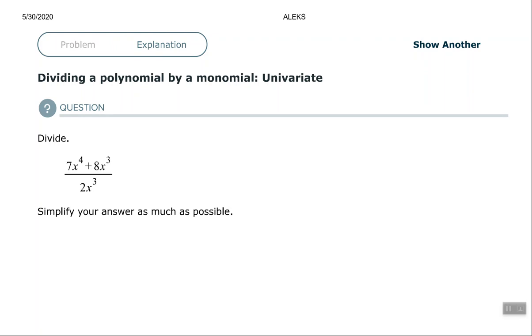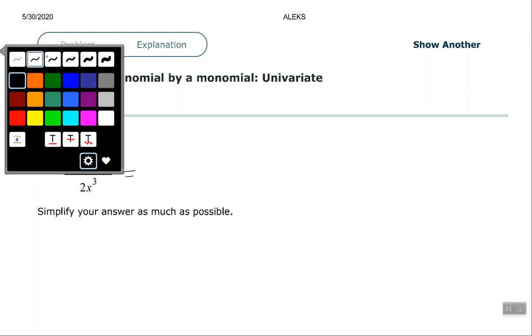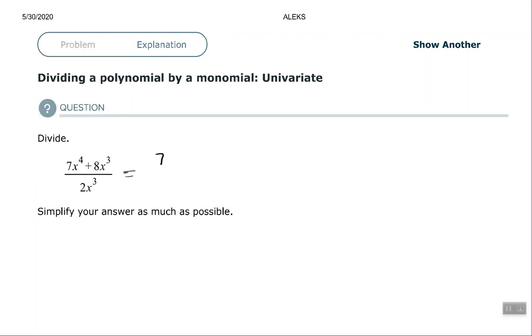Hey good people, Arthur Morris here. I hope all is well. In this video, we're going to look at dividing a polynomial by a monomial univariate. To divide a polynomial by a monomial, we simply need to divide each term in the numerator by the term in the denominator. So we're going to make this into separate fractions.